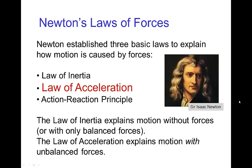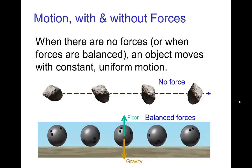This law of acceleration is also called Newton's second law of motion. Just to remind you, when there is no force, or if there are balanced forces, then an object moves with constant uniform motion. The simplest example: something floating in space with absolutely no forces on it just moves with a constant speed and constant direction in a straight line.